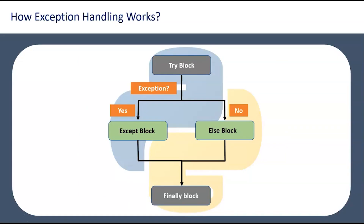It's a straightforward flowchart for exception handling. You start with a try block. If an exception occurs, it goes to the except block; otherwise it goes to the else section. Finally, the finally block executes and the program stops. The code in the finally block is mandatory for releasing resources the program has consumed — CPU resources, memory resources, hardware resources — you have to release those in the finally block.